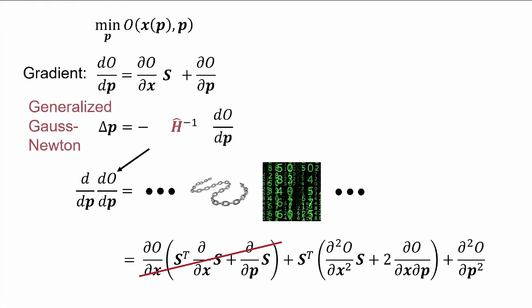And when we do that, we end up with a generalized Gauss-Newton approximation for our Hessian, which we basically get for free since we can reuse the sensitivity term we've already computed for the gradient.